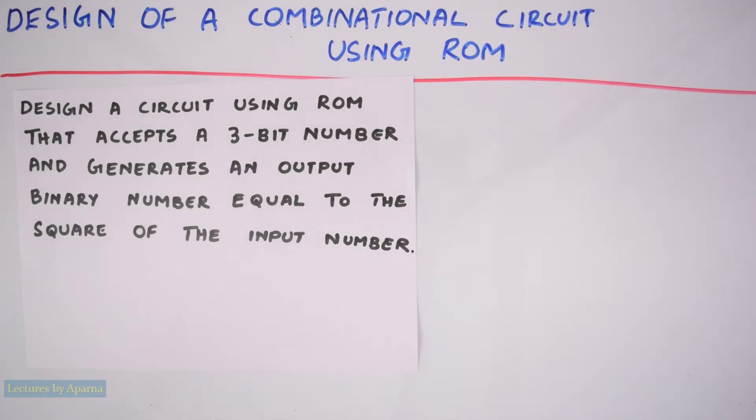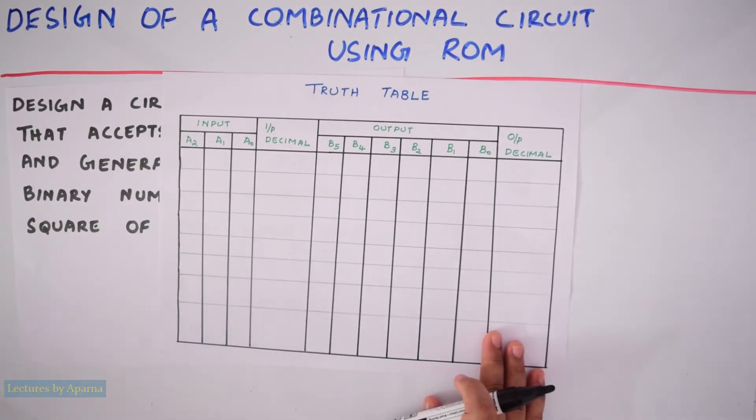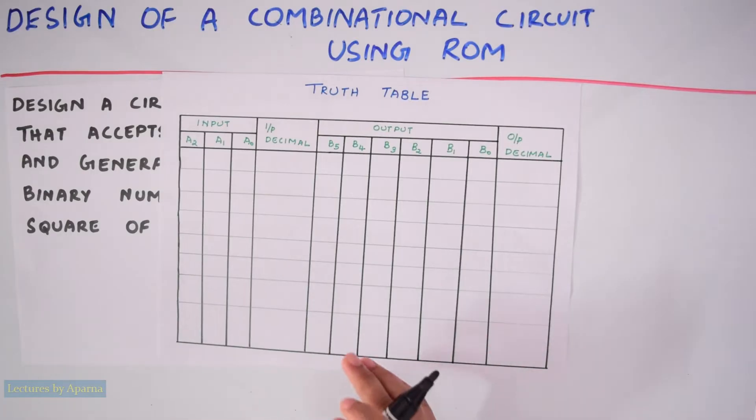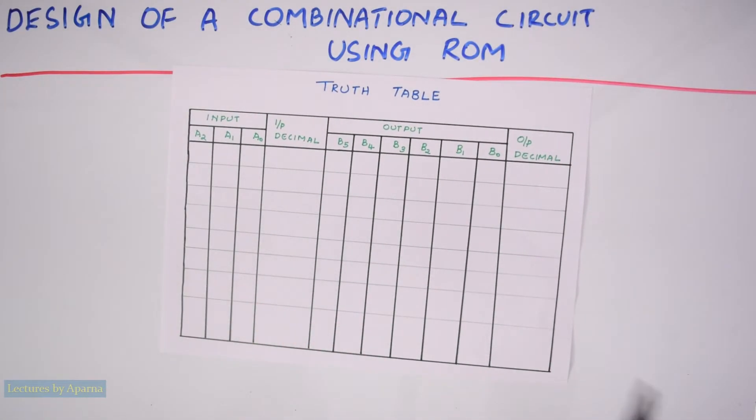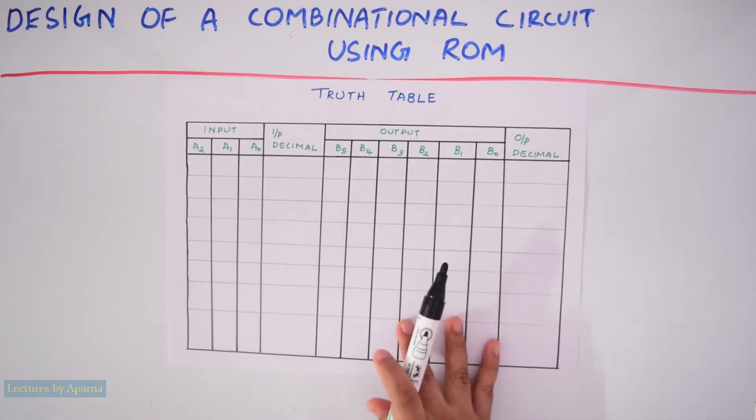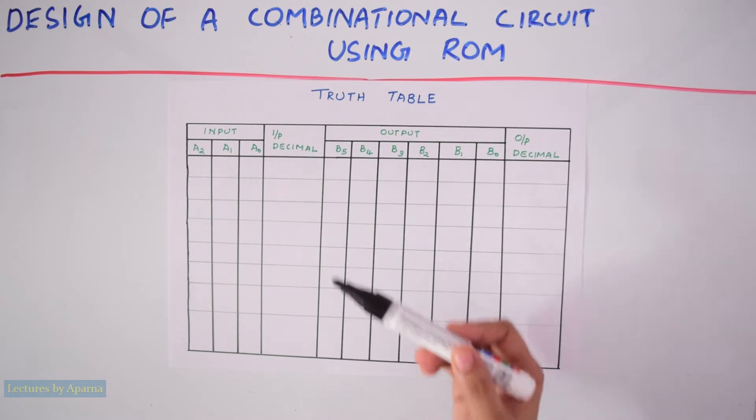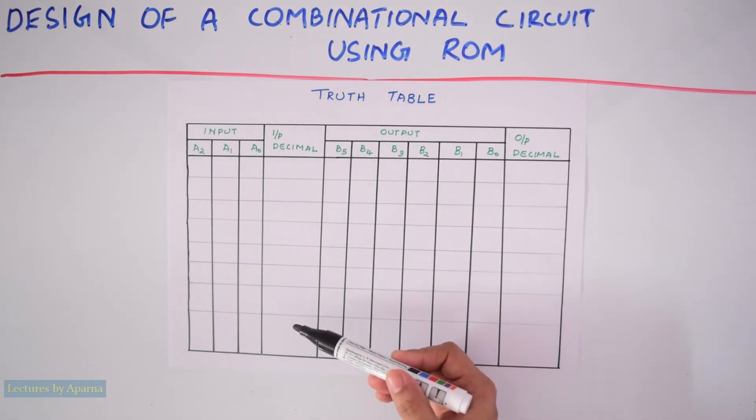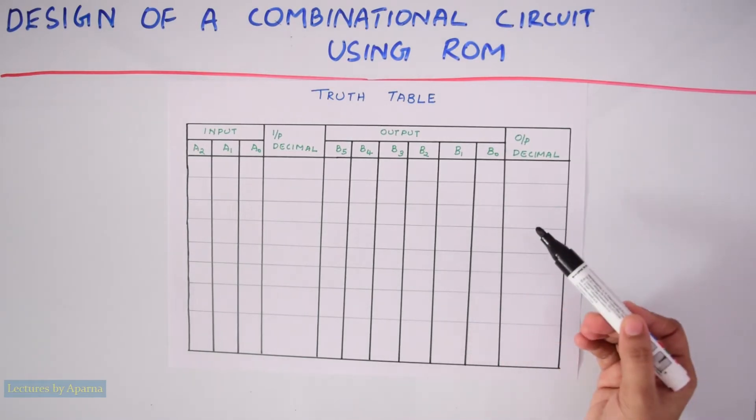This truth table has four sections. In the first section, you have to write the 3-bit binary number. In the second section, it is the decimal equivalent of the input binary number. In the third section, it is the output binary number. And in the fourth section, it is the decimal equivalent of the output binary number.